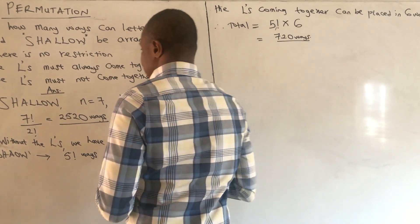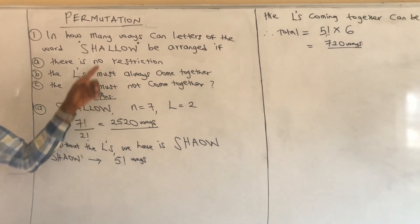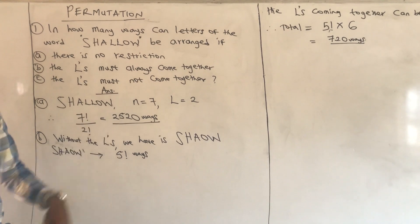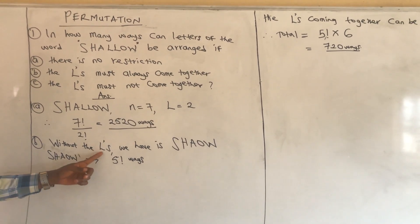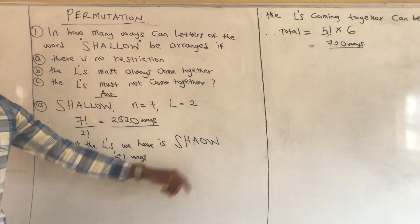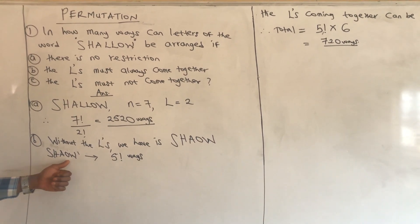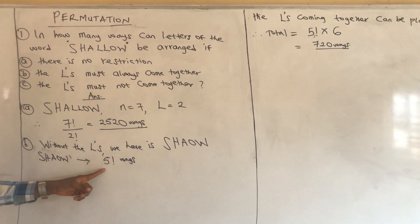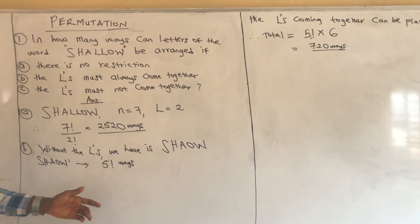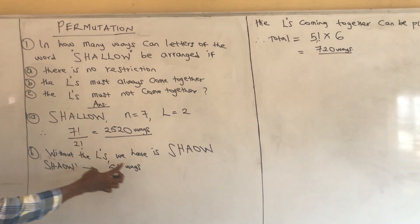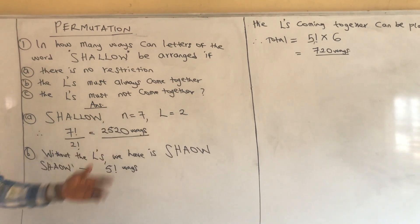That is how we handle such questions. In how many ways can letters of the word 'shallow' be arranged with the L's coming together in any arrangement? Without the L's, we have S-H-A-O-W left, which can be arranged in five factorial ways — five factorial gives us 120. The L's can then be placed in six different positions, giving us 720 ways.